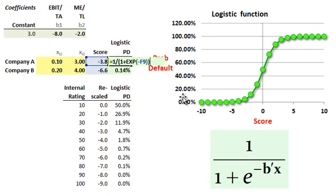What we've done visually is we're somewhere right about here on the score, negative 3.8, and we've computed the y-value, which is the probability of default of 2.19%.